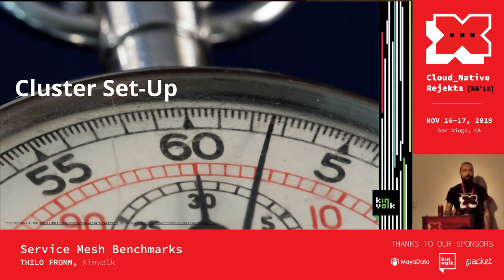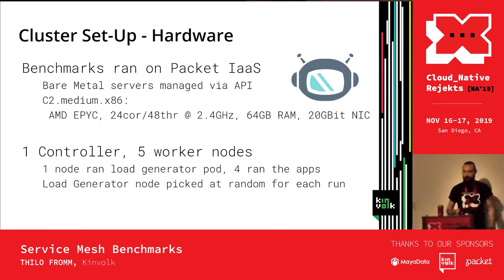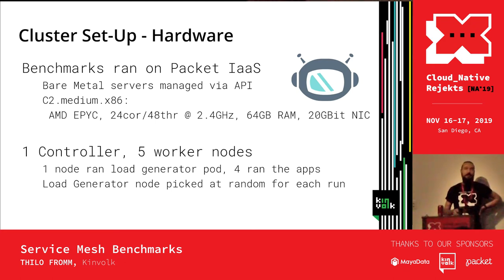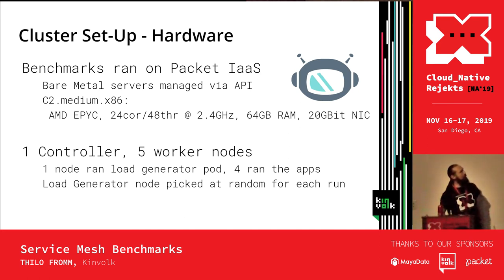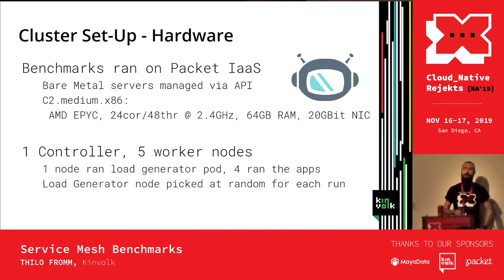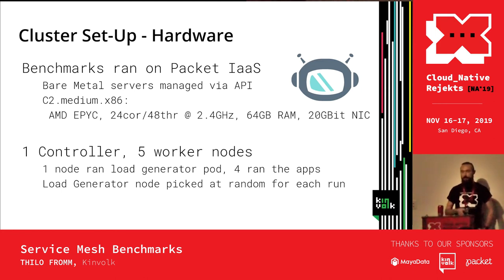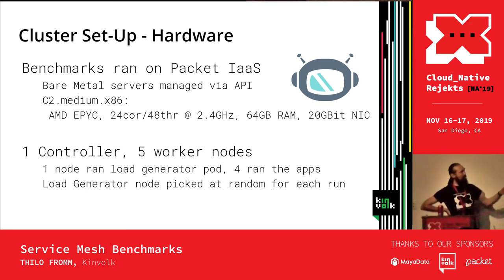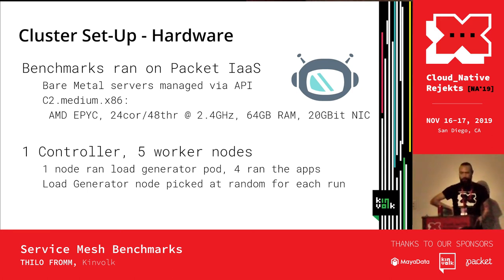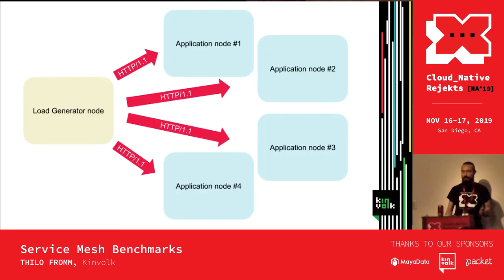For our cluster setup, we used Packet, an infrastructure-as-a-service provider with a nice API for deploying physical bare-metal servers. The server type was C2 medium x86, powered by an AMD EPYC 2018-generation CPU with 24 cores and 48 threads (hyperthreading enabled), 64 GB RAM, and two 10-gigabit network interfaces in bonded mode. Our cluster had one controller and five worker nodes — one dedicated load generator node and four running the application. The load generator node was picked at random for each run.